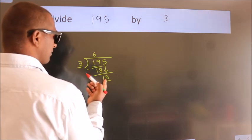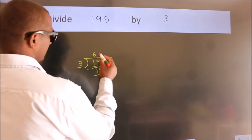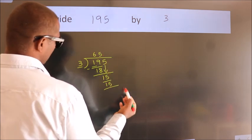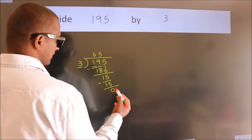When do we get 15? In 3 table, 3 fives 15. Now we subtract. We get 0.